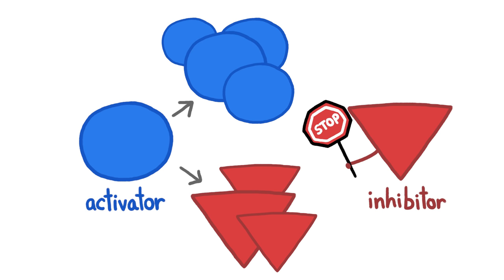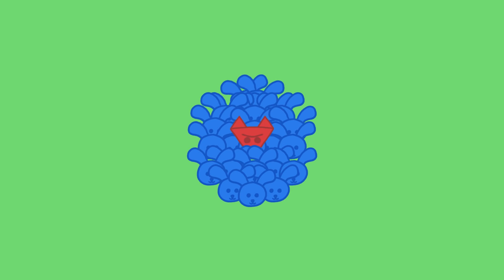In other words, it's kind of like a predator-prey relationship. The more activator bunnies there are, the more new bunnies they make. But a bigger bunny population also means more food for the inhibitor foxes, which means more foxes, which leads to fewer bunnies, which leads to fewer foxes.